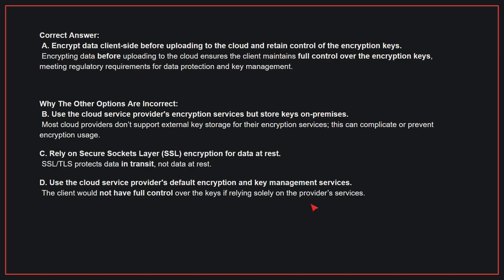Why the other options are incorrect: B, use the cloud service provider's encryption services but store keys on-premises — most cloud providers don't support external key storage for their encryption services, which can complicate or prevent encryption usage. C, rely on SSL encryption for data at rest — SSL/TLS protects data in transit, not data at rest. D, use the cloud service provider's default encryption and key management services — the client would not have full control over the keys if relying solely on the provider's services. Therefore, the correct answer is A.